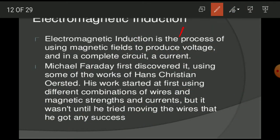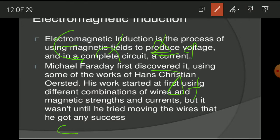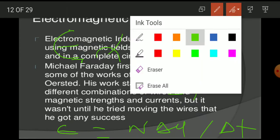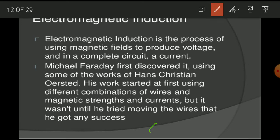More will be the change of flux, more will be the induced EMF. According to Faraday, induced EMF is directly proportional to the rate of change of flux: E = NΔφ/Δt. According to Lenz's law, the induced EMF equals minus NΔφ/Δt. The induced current will be produced in a direction to oppose the cause which is producing it — that is Lenz's law.